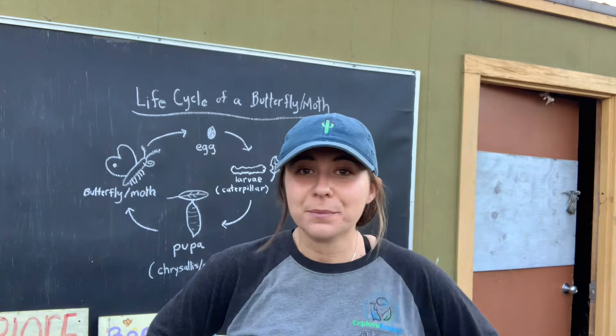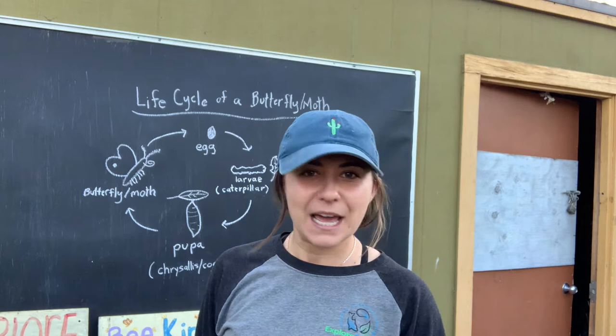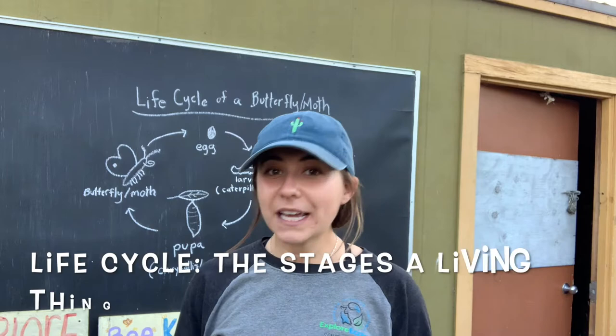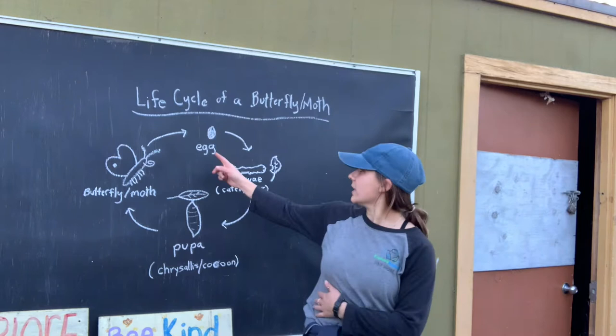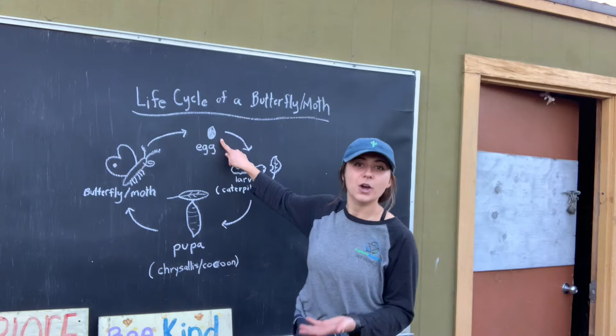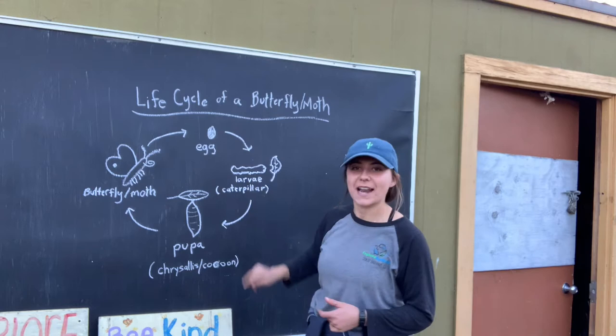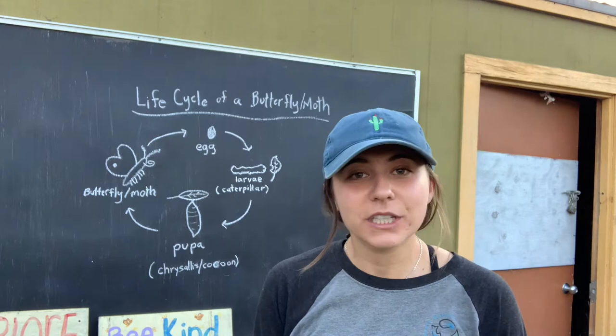Let's get started on their life cycle. A life cycle is how an animal starts as a small little thing and grows into an adult. Butterflies and moths start out as an egg. A female butterfly or moth will lay an egg on a leaf, and this egg is going to hatch and out of it will come the larva — a big fancy science word that's really just the caterpillar stage. The caterpillar's job is to eat, eat, eat.